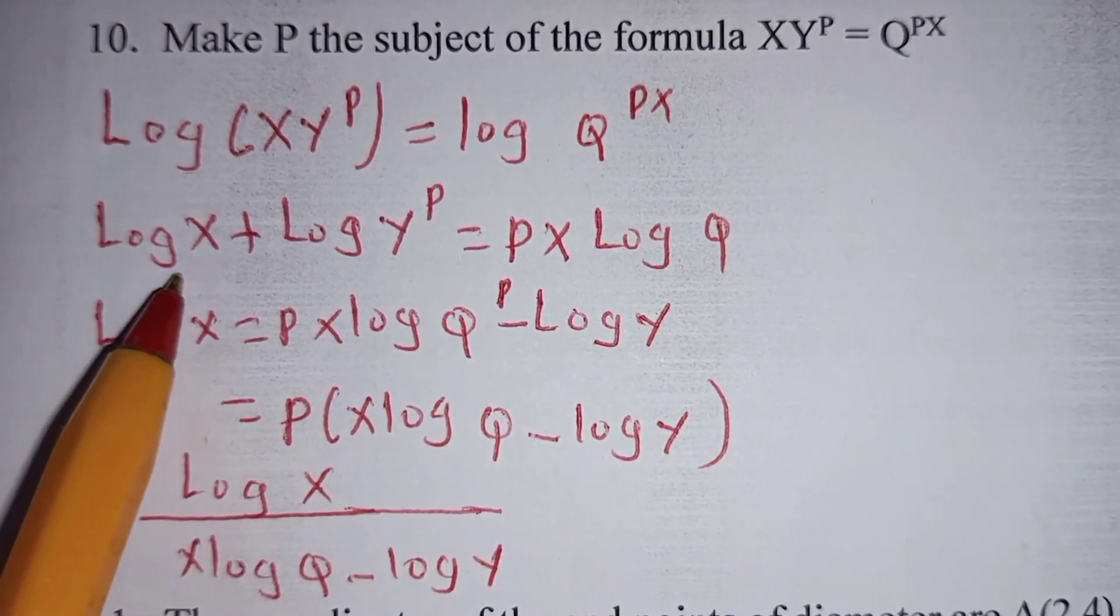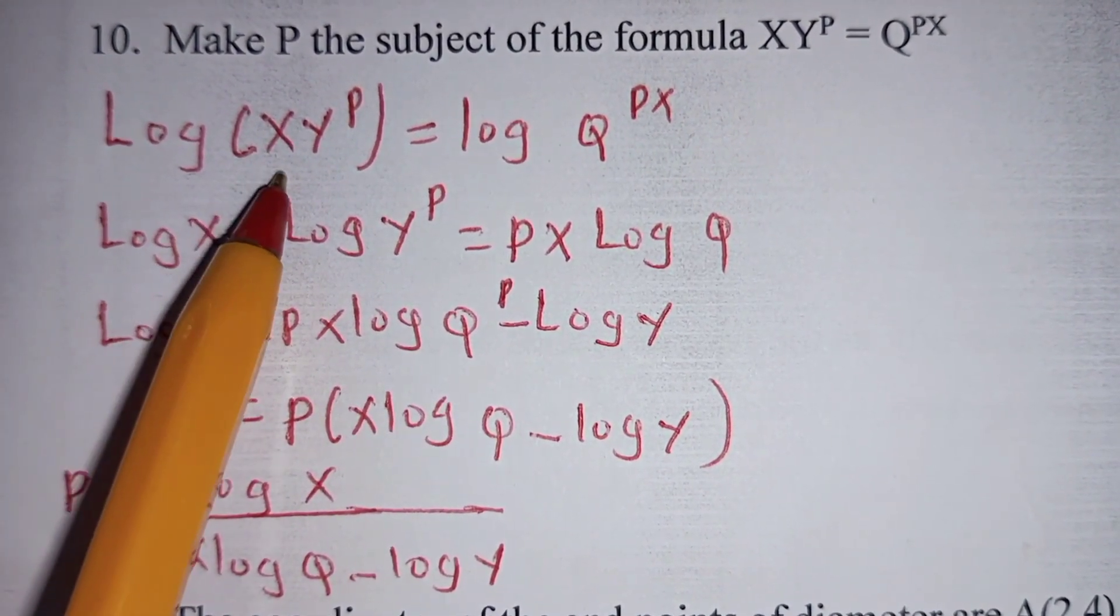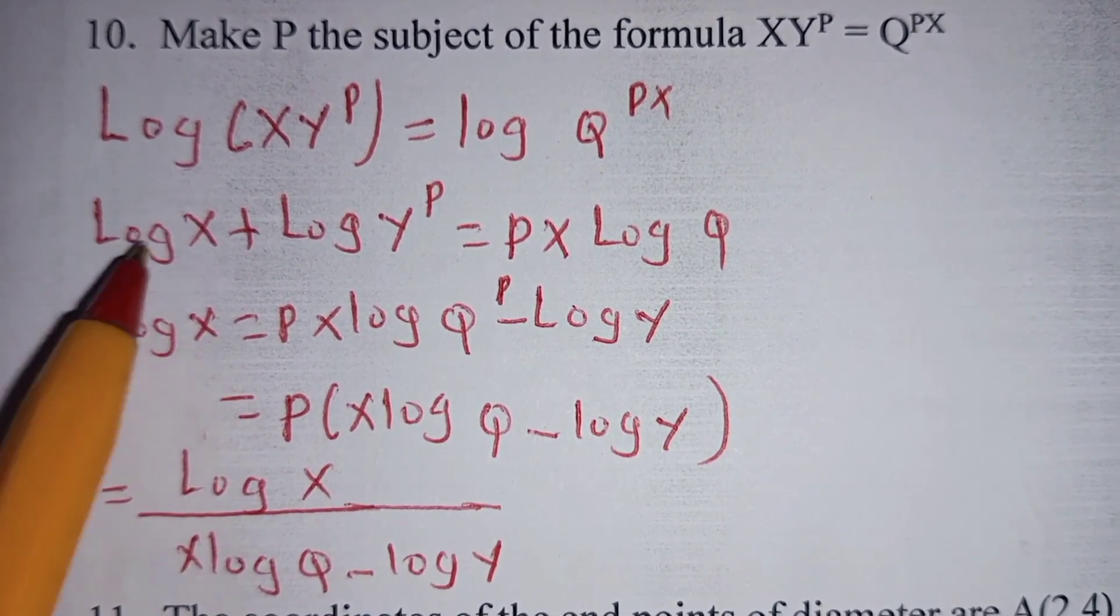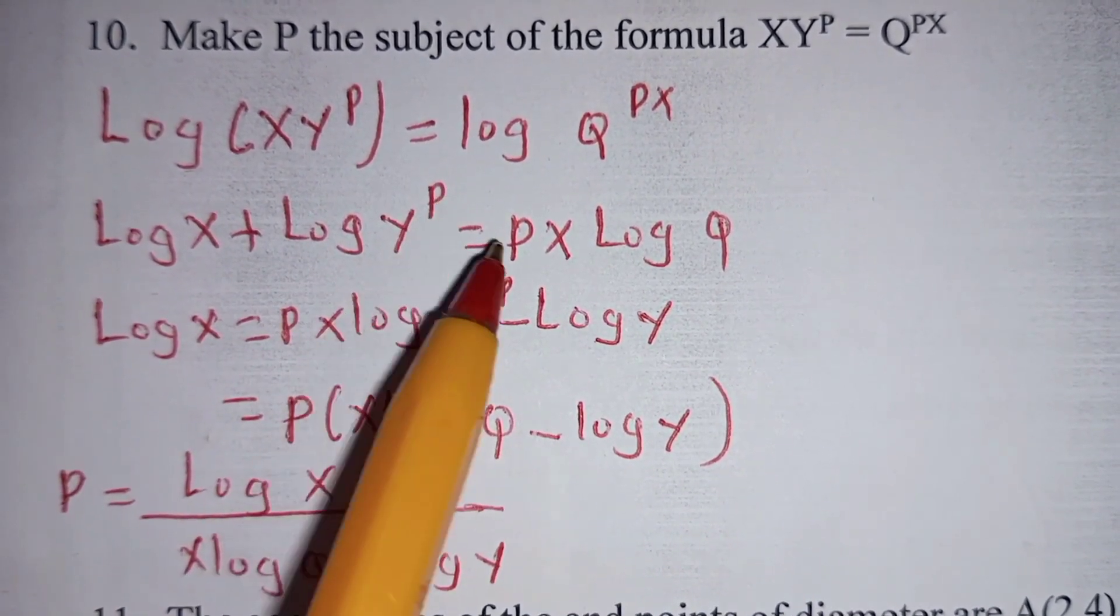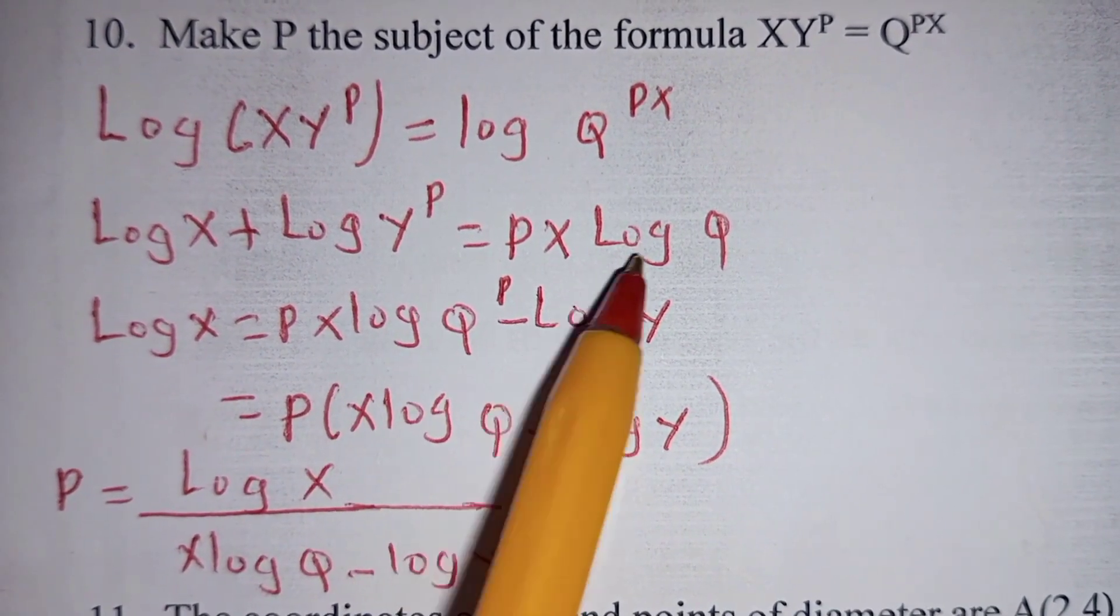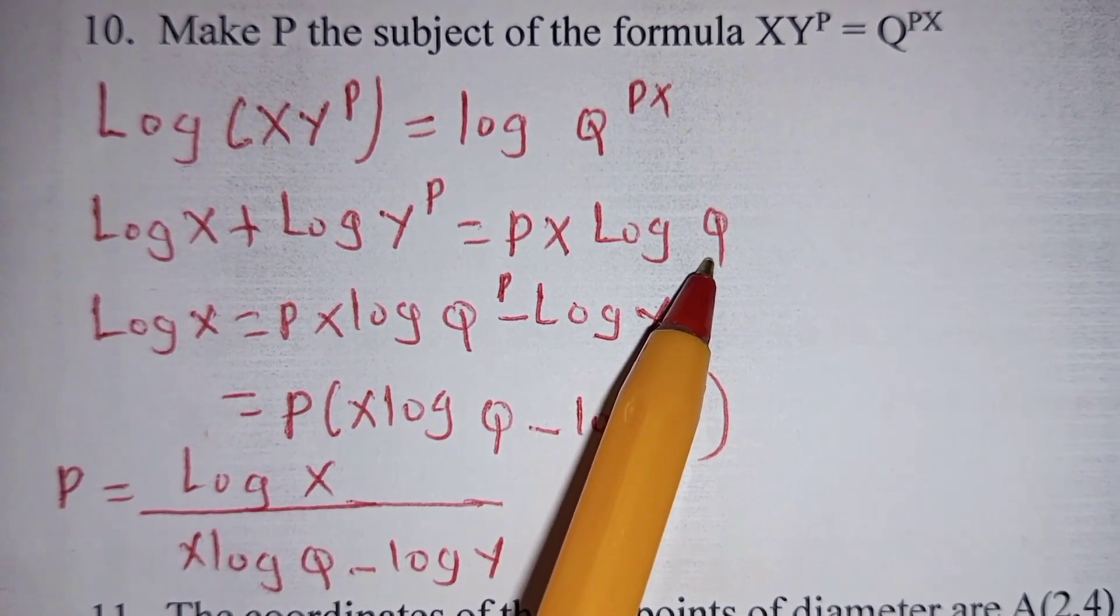By rules of logarithm, when you take a logarithm of a product number, it is the same as adding those numbers. So log X plus log of Y power P is equal to log of Q power PX.